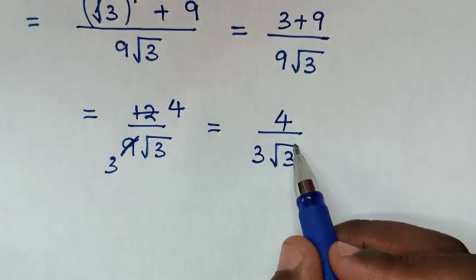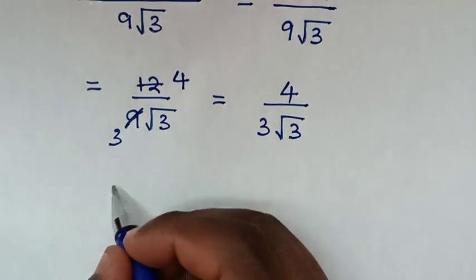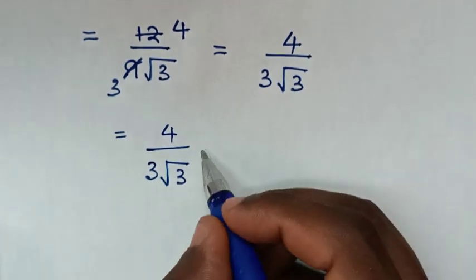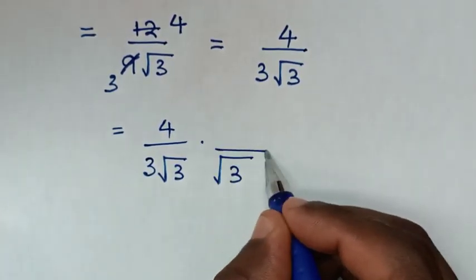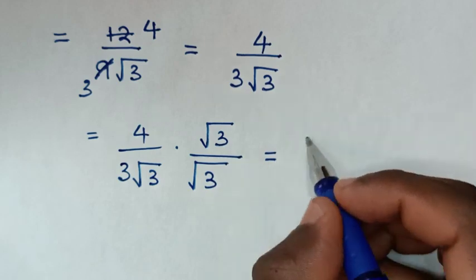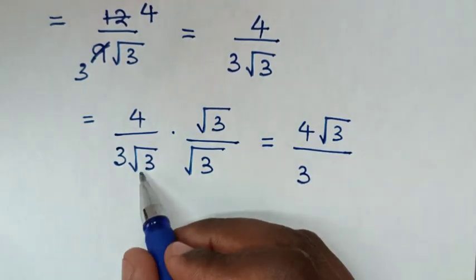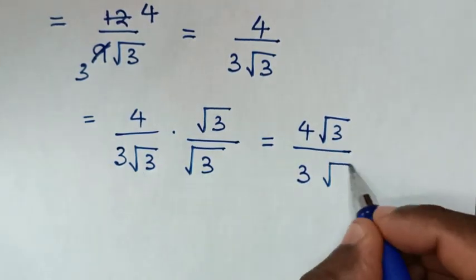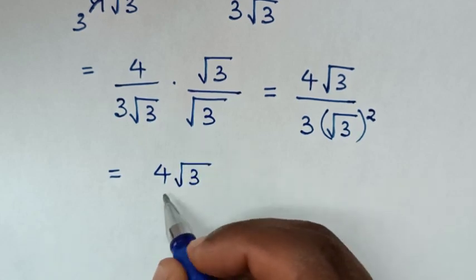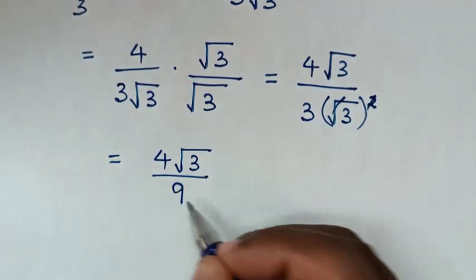Then in the next step, we rationalize the denominator by multiplying by square root of 3 in the denominator and in the numerator. So it will be 4 over 3 square root of 3, times square root of 3 over square root of 3. This gives 4 square root of 3, over 3, times square root of 3 squared. This square will cancel with this square root, so 3 times 3 is 9. Therefore, the final answer is 4 square root of 3 over 9.